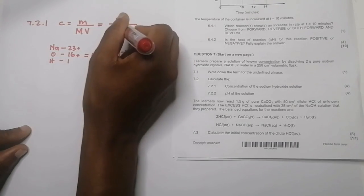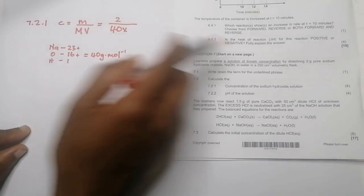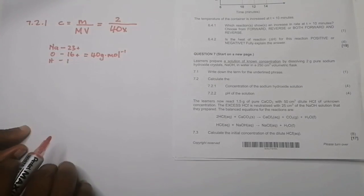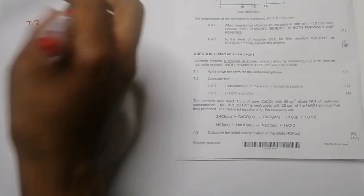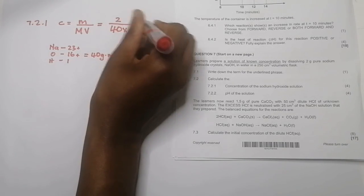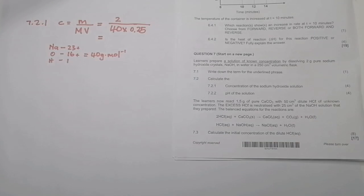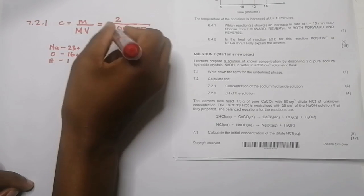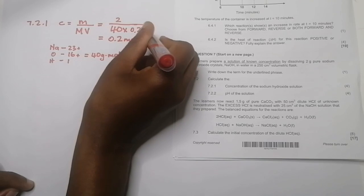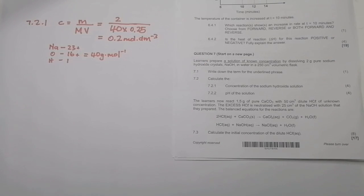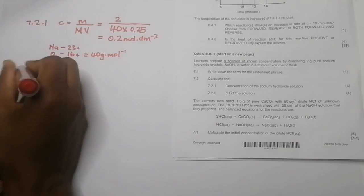Remember that when using this formula, volume must always be in cubic decimetres. So 250 divided by 1000 gives 0.25 cubic decimetres. That gives a concentration of 0.2 moles per cubic decimetre for sodium hydroxide.